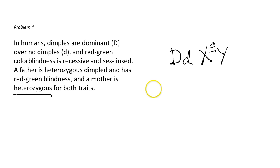Mother is heterozygous for both traits, which means she has a big D and a small d. She has two X chromosomes, and on one of them, she has the dominant allele, and on the second one, she has the recessive allele.